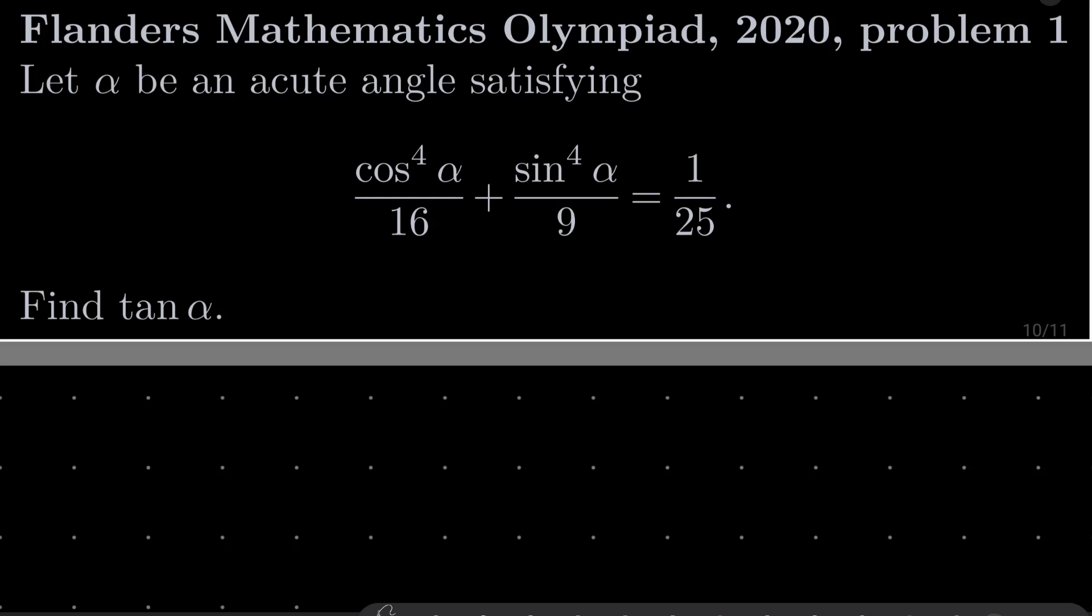Let alpha be an acute angle satisfying this equation: cosine to the fourth power of alpha over 16 plus sine to the fourth power of alpha over 9 equals 1 over 25. We wish to find the value of tangent of alpha.